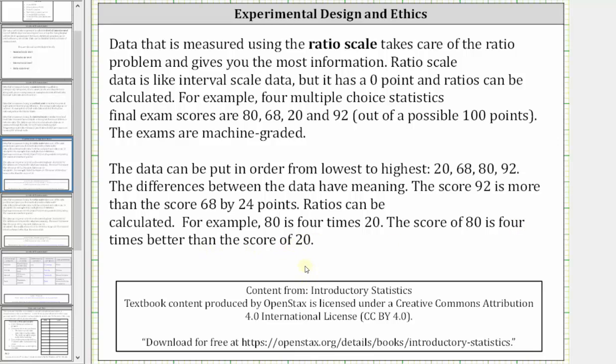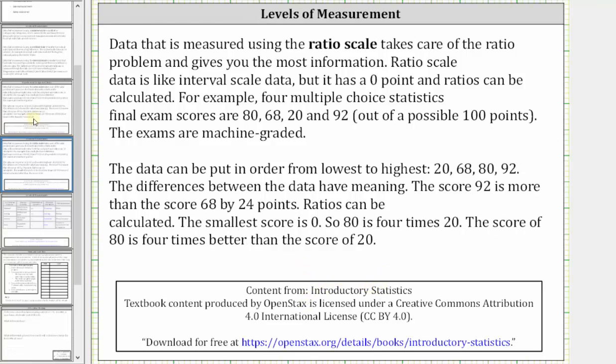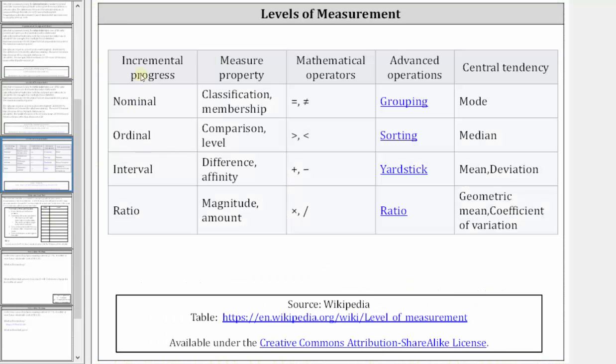The previous content is from the OpenStax introductory statistics textbook. Before we go, I also want to show a table that shows the level of measurement as well as the measurement property, mathematical operators, advanced operations, and central tendency for each of the levels of measurement. And this table is from Wikipedia, which you can find following the link below. I hope you found this helpful.